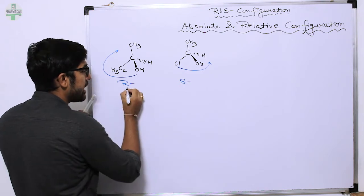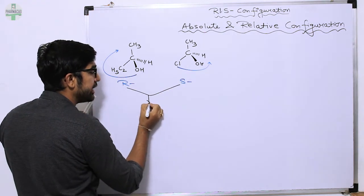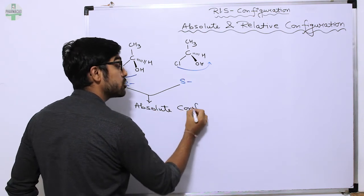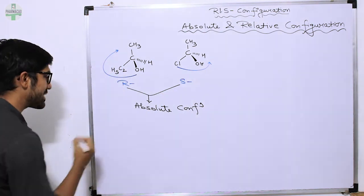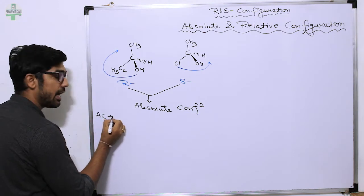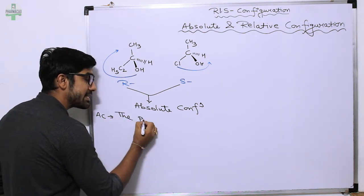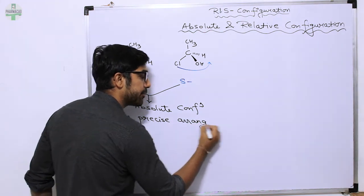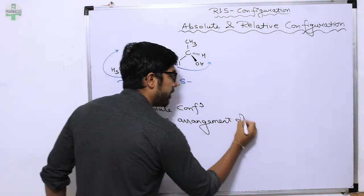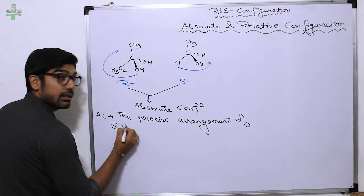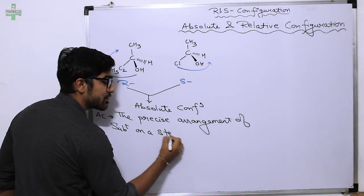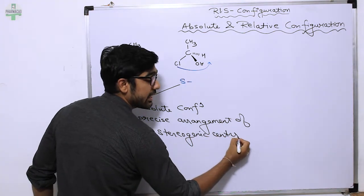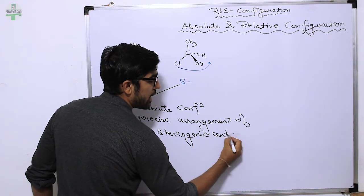This is called absolute configuration. So exactly, absolute configuration means the precise arrangement of substituents on a stereogenic center is called absolute configuration.